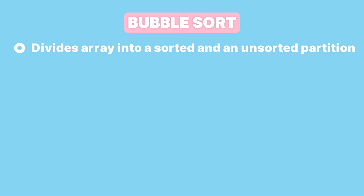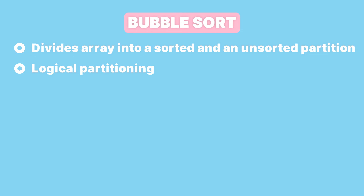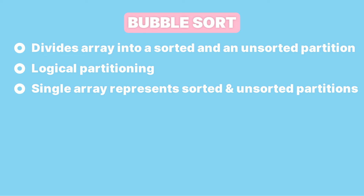Let's see how it works. Bubble sort, like many other algorithms, divides the array into a sorted and an unsorted partition. This partitioning is done logically, meaning that we don't create separate array instances. Instead, we use a single array to represent what has been sorted and what remains unsorted, and we do that by using variables.